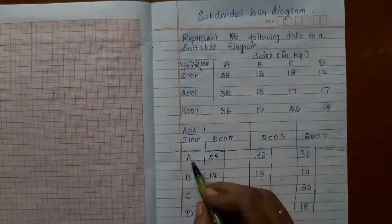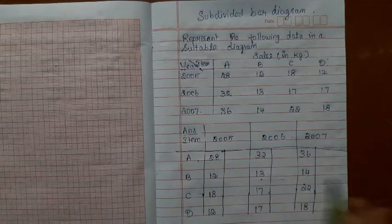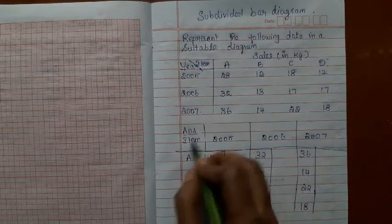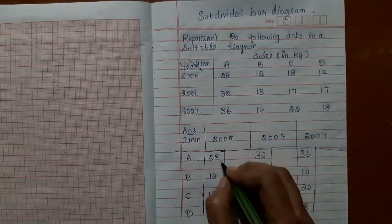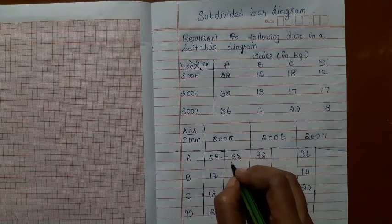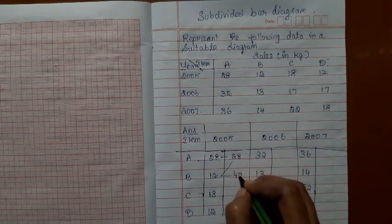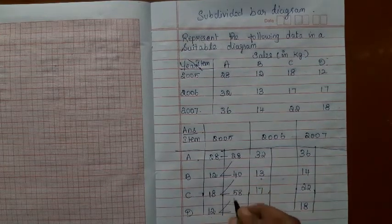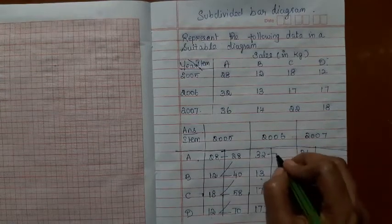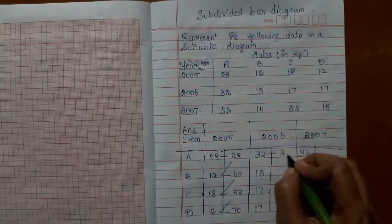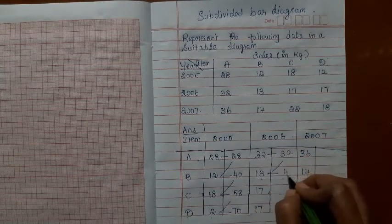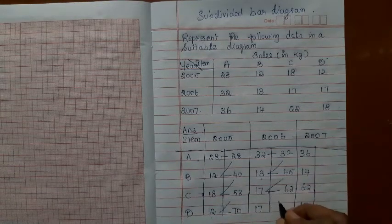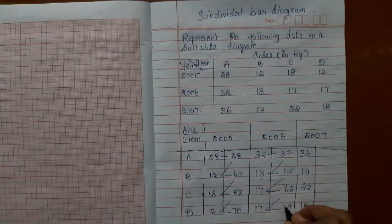Before drawing this diagram, I have this table. I have written year, and then I just keep adding. If you add this, you get 40. If you add this, you get 58. And if you add this, you get 70. And for the next year again, I have written the given values: 32 plus 13 is 45, plus 17 is 62, plus 17 is 79.